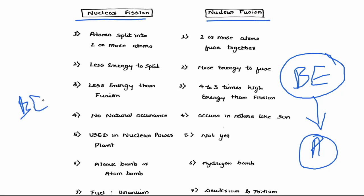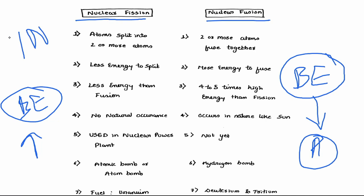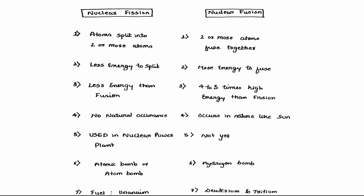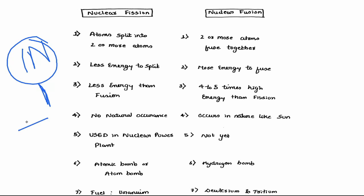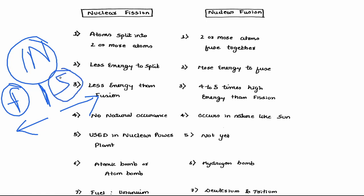So if binding energy is more, then the atoms are more stable, and vice versa. Atoms always try to increase their binding energy. Iron and nickel are the most stable atoms, so they are taken as reference. If the atom is lighter than iron or nickel, it should be fused to get energy. If the atom is heavier than iron or nickel, then it should be split to get energy.